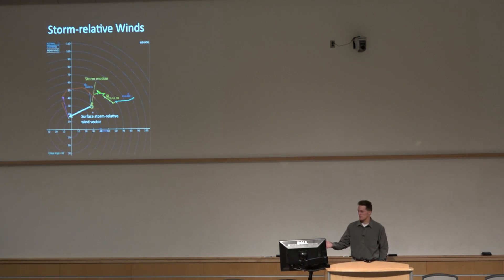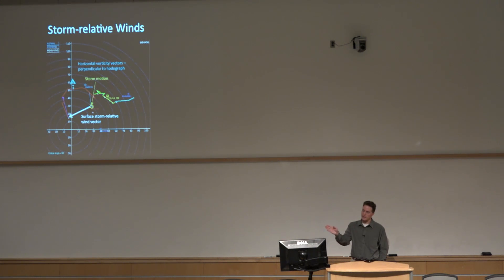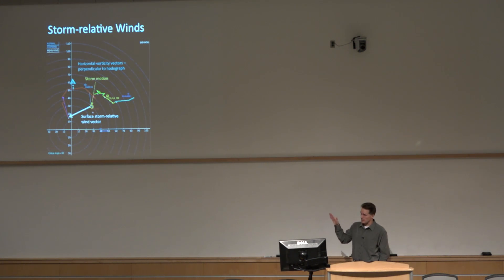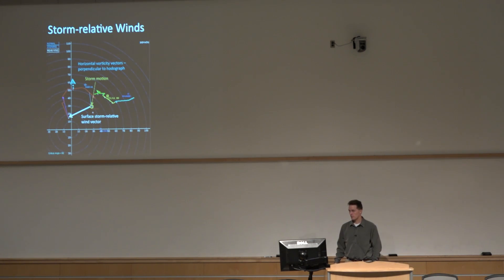For anyone familiar with hodographs, there's something very interesting about this hodograph shape and that storm-relative wind — notice it's about perpendicular to the orientation of the hodograph right down near the ground. Using the right-hand rule: these are shear vectors, so going up in height around one kilometer, pointing your fingers in the direction of the vertical shear — toward the right or east — your thumb points north. That's the vorticity vector, which is always perpendicular to and to the left of the hodograph.